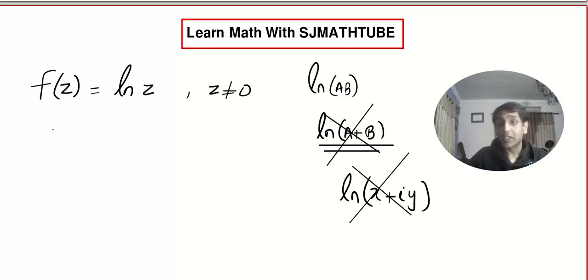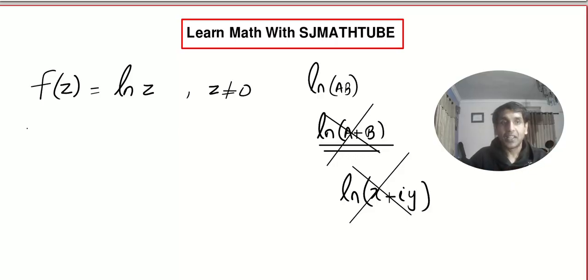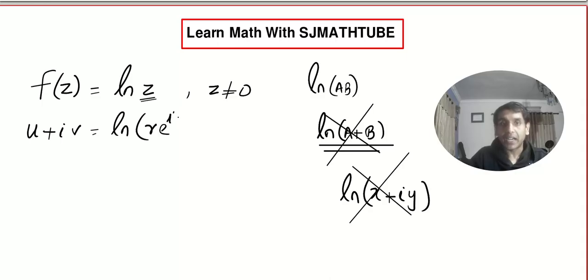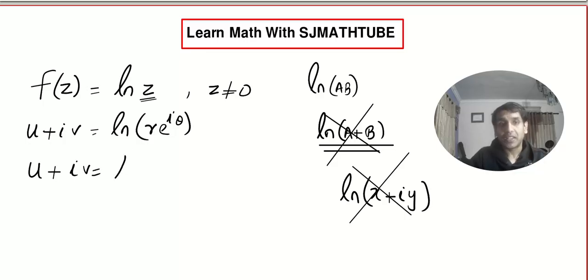So the Cartesian method will not be of any help here. I start with u + iv = log(r·e^(iθ)). Using log(a·b) = log a + log b, this becomes log r + log(e^(iθ)).